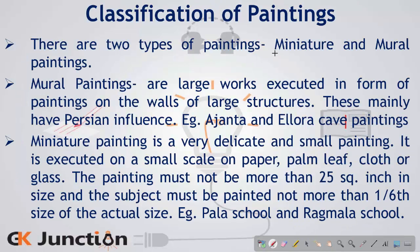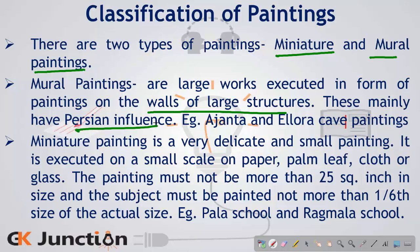Talking about the classification of paintings, paintings are classified into mainly two types depending upon their size: miniature painting and mural painting. Mural paintings are very large works executed in the form of paintings on walls of large structures, and these mainly have a Persian influence upon them.